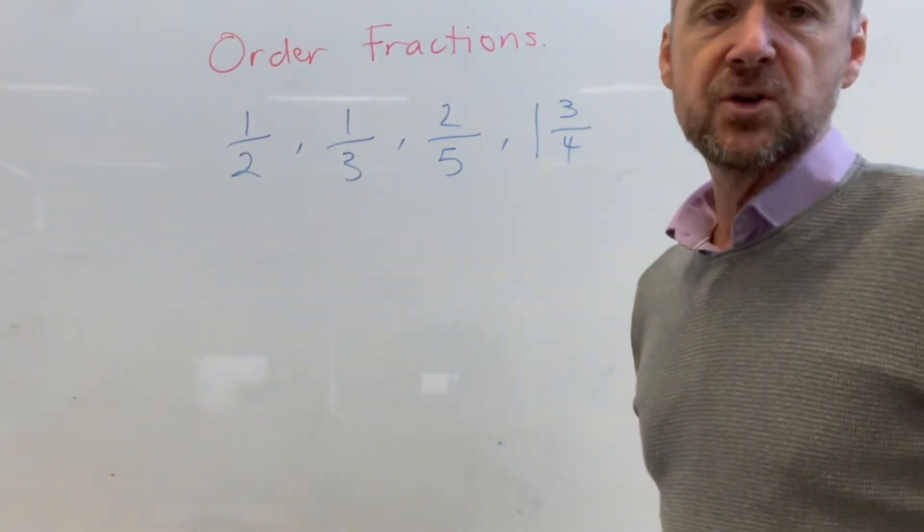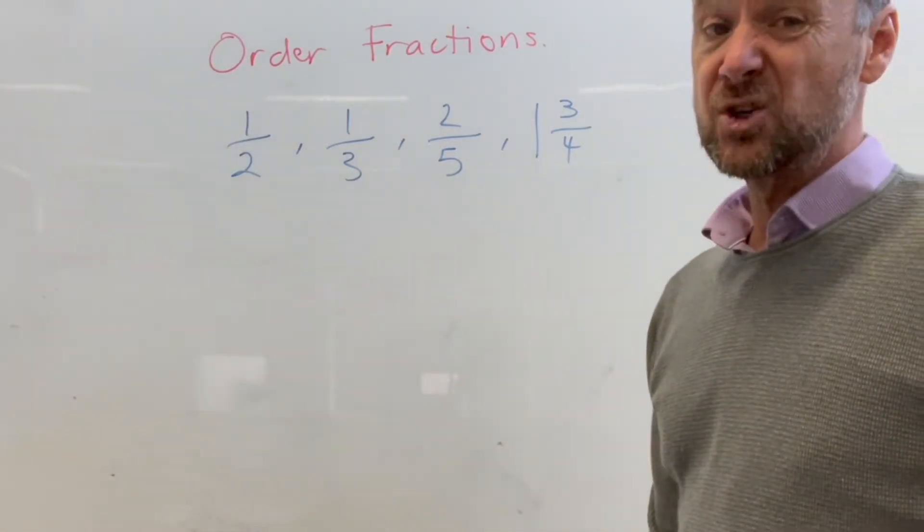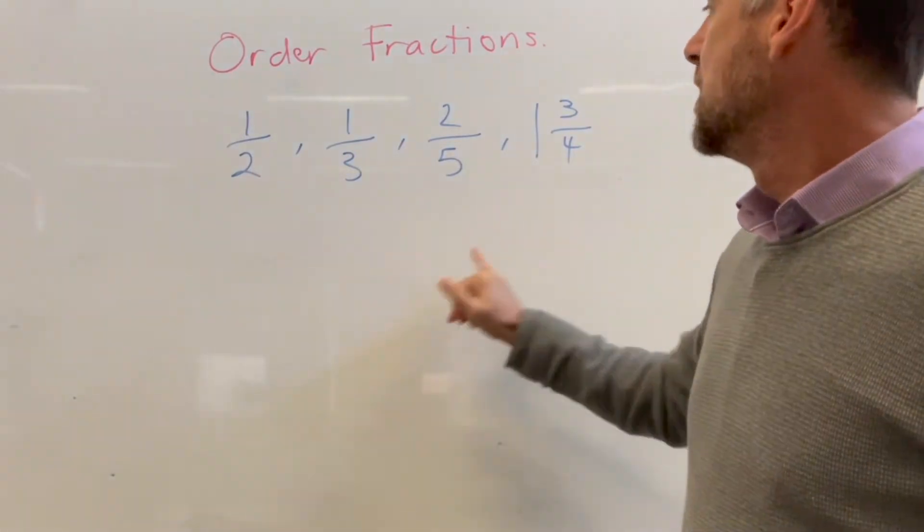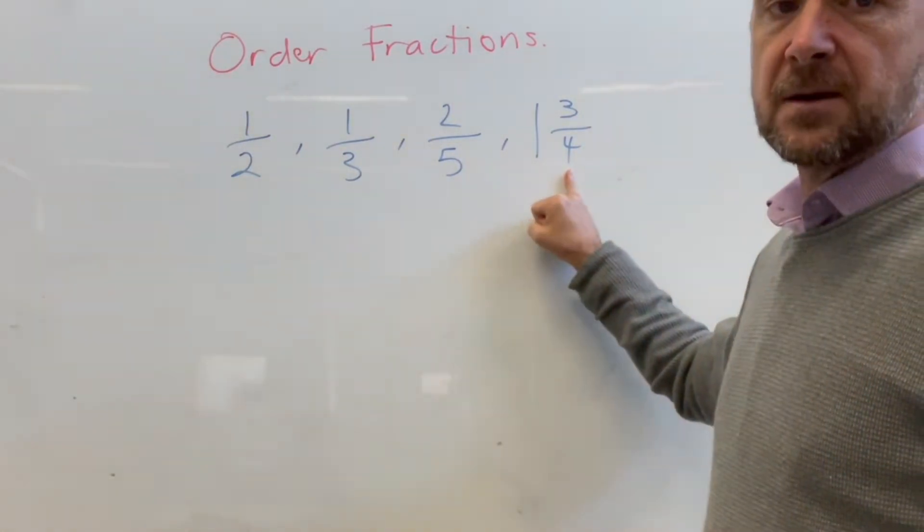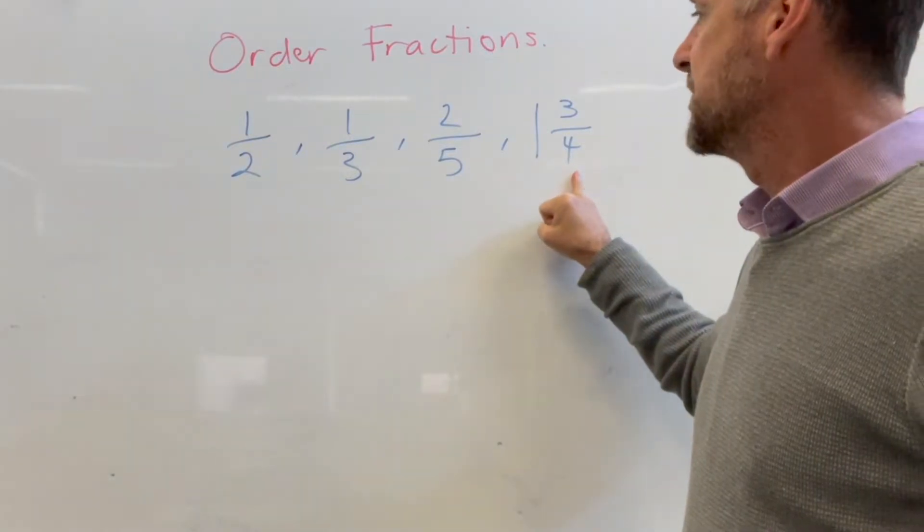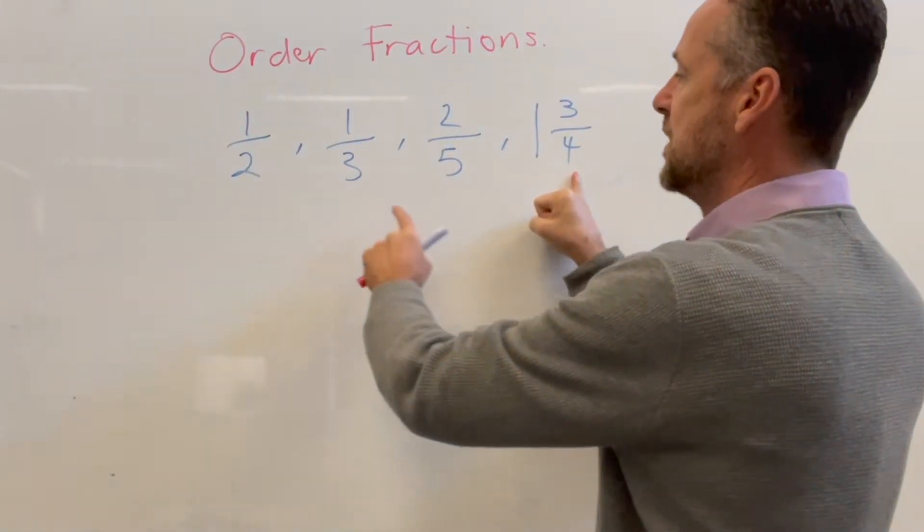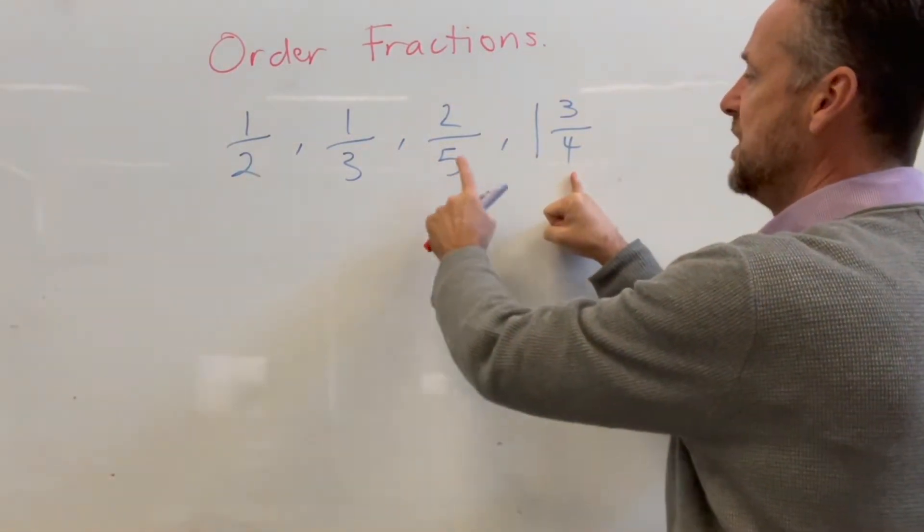So what we're looking for here between two, three, four and five is a common denominator. Now two goes into four, so it means that if we find the common denominator for four we don't have to worry about the two. So we're looking for a common denominator for three and five and four.